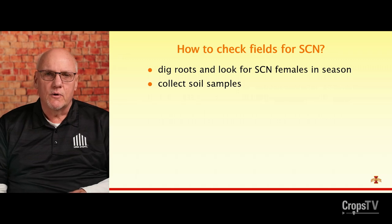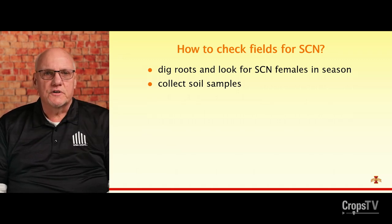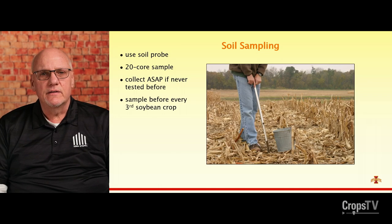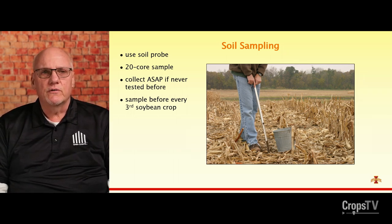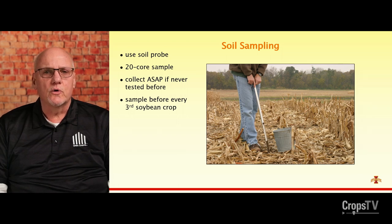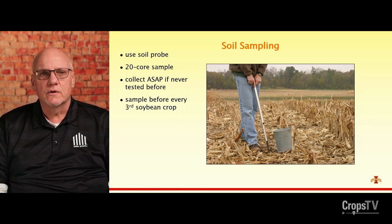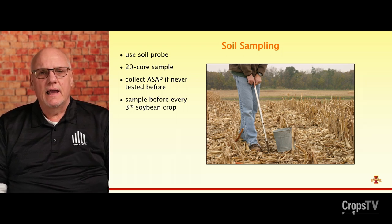That should answer most questions about digging roots and looking for SCN in the field. There's another way to check fields for SCN that requires less strategic thinking and just getting out there and doing sampling. Collecting soil samples is an integral part of managing the nematode. Use a soil probe — not a spade or hand trowel — and we want 20 cores from no more than every 20 acres. Put those cores in a bucket, mix them well, and send them to a lab.